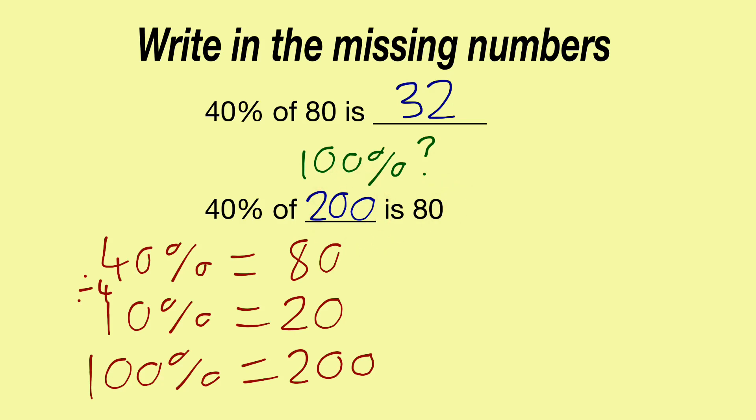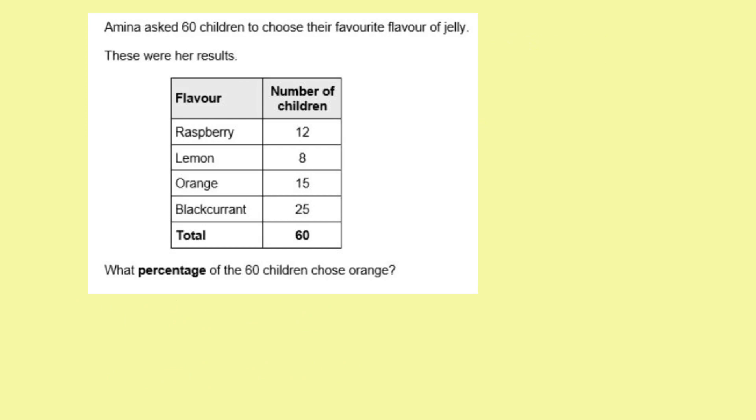Right, let's move on. So here we have another SATs question. It wants us to work out what percentage of children chose orange. So there's orange there. That was 15 children. So 15 out of 60 children chose orange. Now, this is difficult because that's 60. If only that was 100, it would be easy. But it's not.